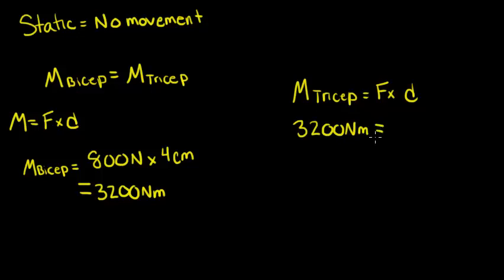We know that the tricep's moment arm is 2.5 centimeters. And we're looking for the force, so we will divide both sides by 2.5 centimeters.